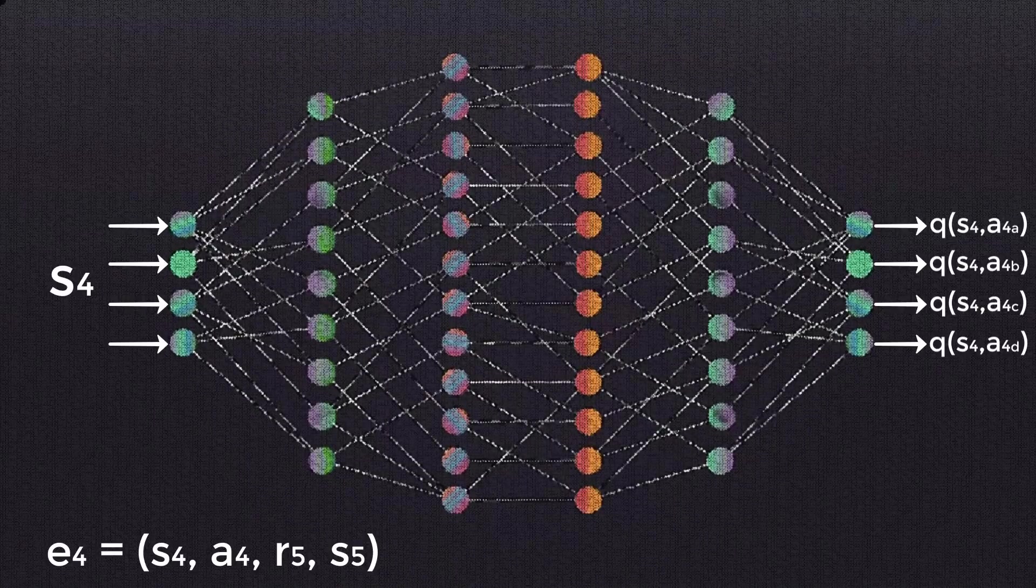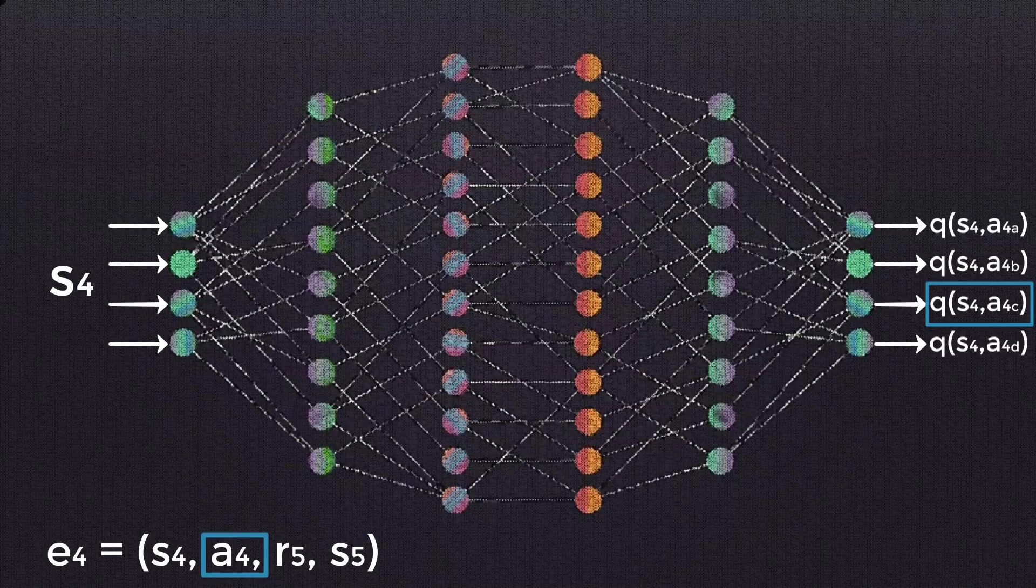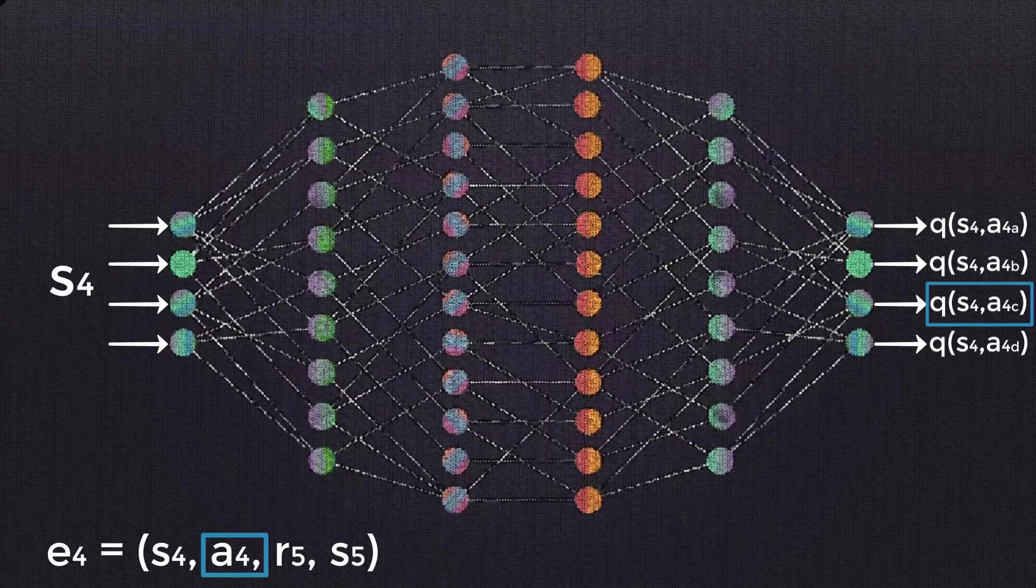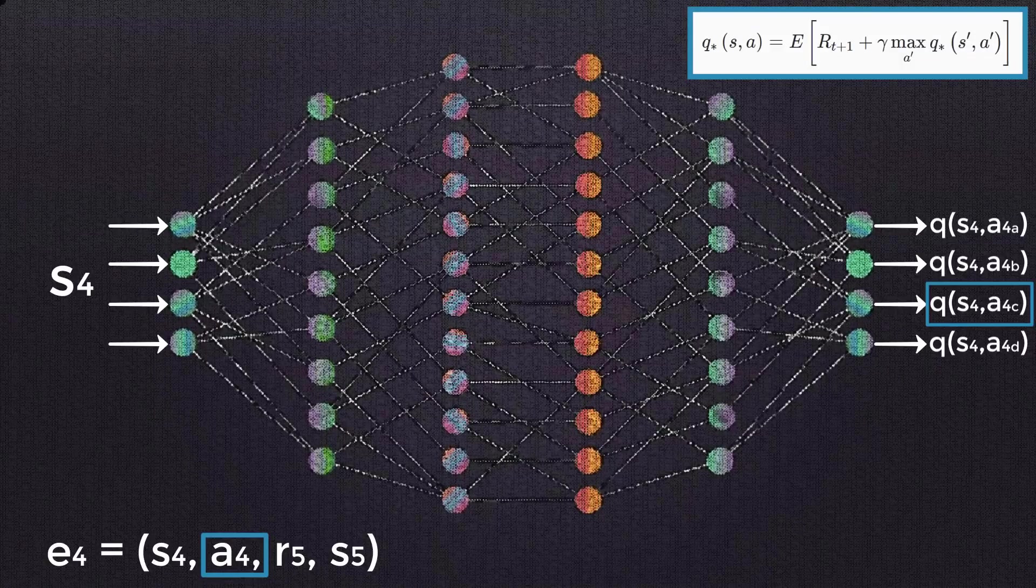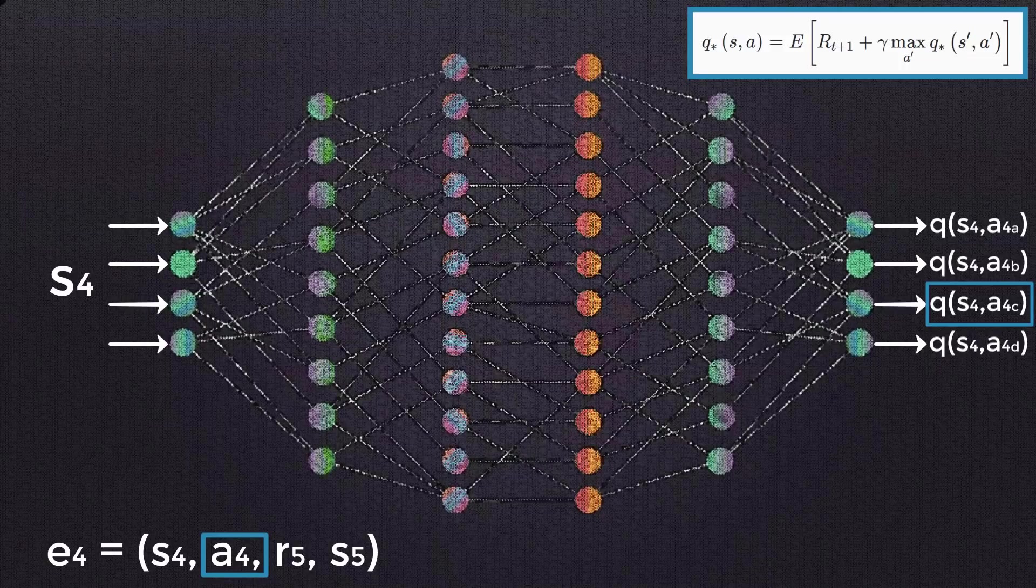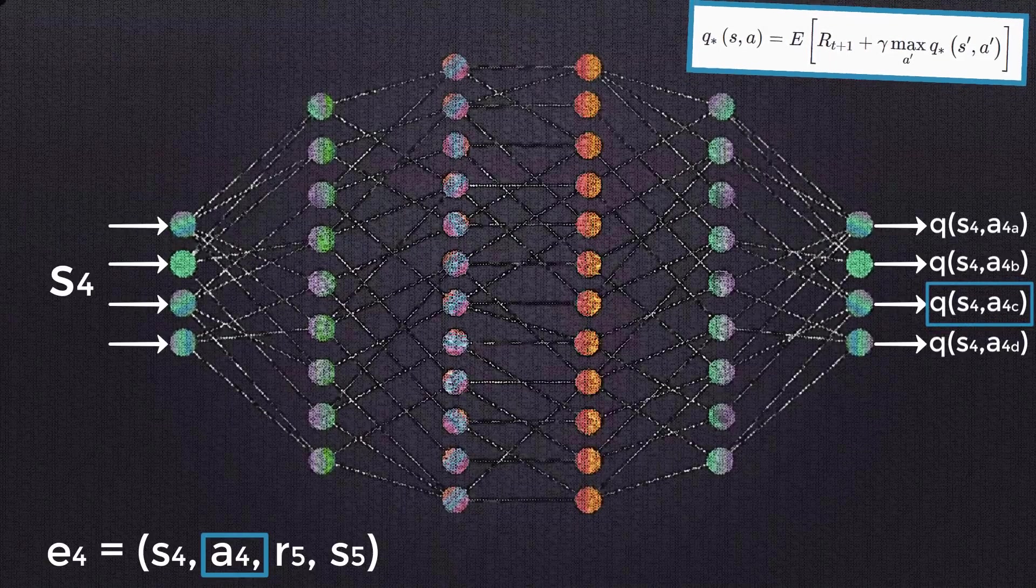At this point, the loss is then calculated. We do this by comparing the Q value output from the network for the action in the experience tuple we sampled and the corresponding optimal Q value, or target Q value, for the same action. Remember, the target Q value is calculated using the expression from the right-hand side of the Bellman equation. So just as we saw when we initially learned about plain Q learning earlier in this series, the loss is calculated like this. We subtract the Q value for a given state-action pair from the optimal Q value for the same state-action pair.